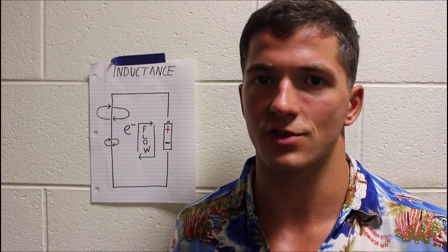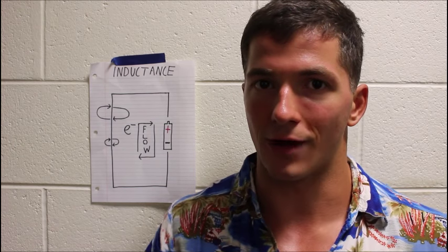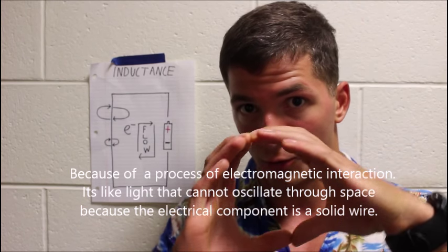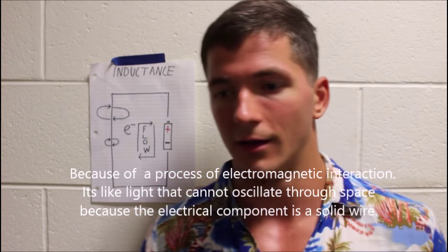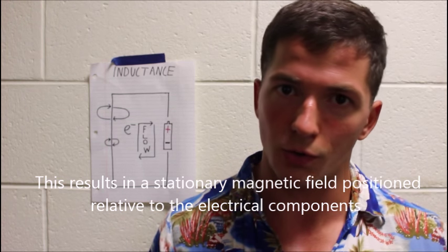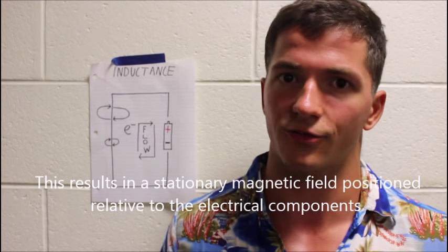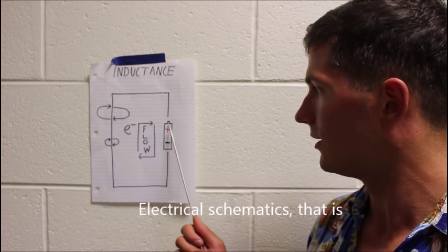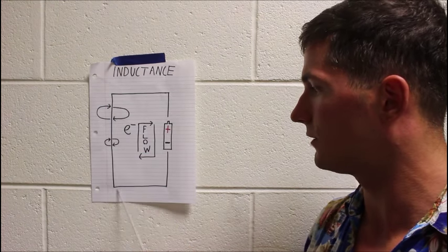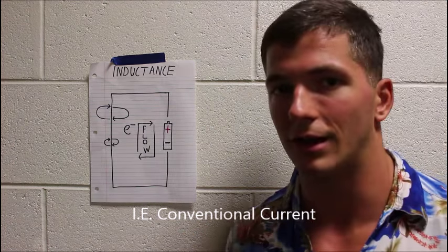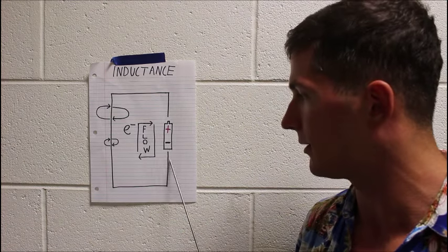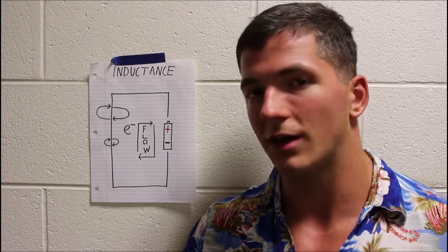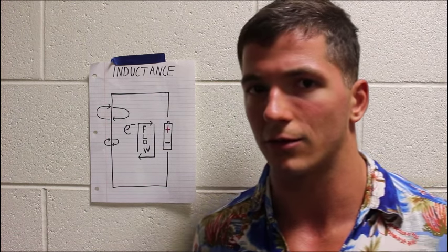In simple terms, all inductance is is the presence of a magnetic field around a wire through which electricity is flowing, and the magnetic field rotates around the wire. You can determine which way the magnetic field is rotating by knowing which way the electrons are flowing. In conventional schematics, electricity flows from the positive to the negative terminal; however, in real life, as you probably already know, it flows from negative to positive.